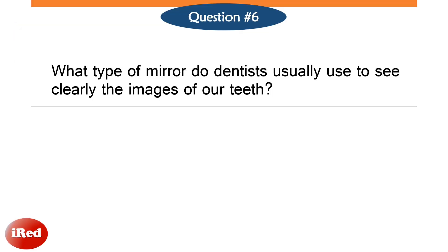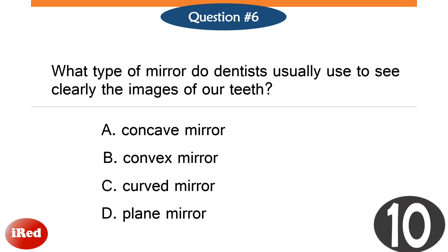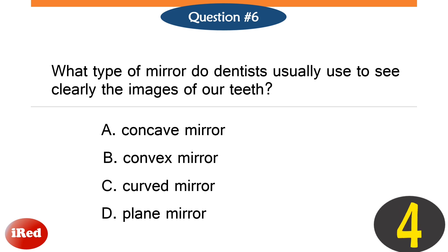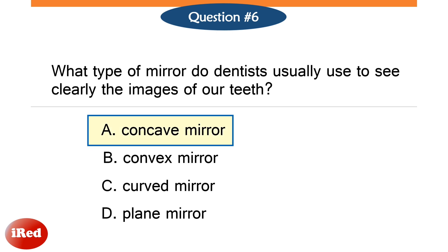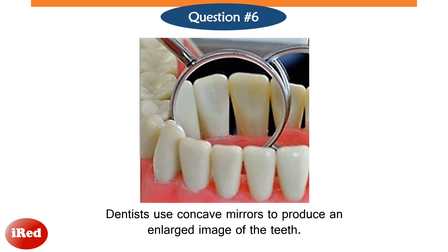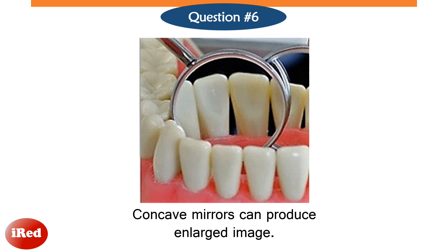Number six: what type of mirror do dentists usually use to see clearly the images of our teeth? The correct answer is letter A. Dentists use concave mirrors to produce an enlarged image of the teeth. Unlike convex and plane mirrors, concave mirrors can produce an enlarged image.